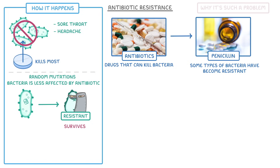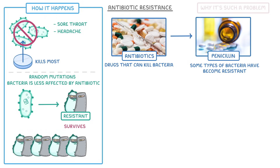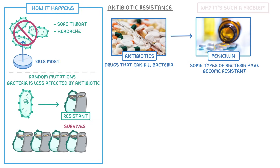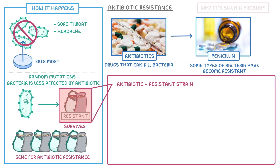And because bacteria are able to replicate so quickly, it quickly forms a new colony of its own, which all have the gene for antibiotic resistance. So we call this new type of bacteria an antibiotic resistant strain.